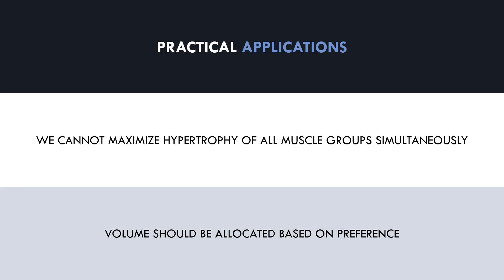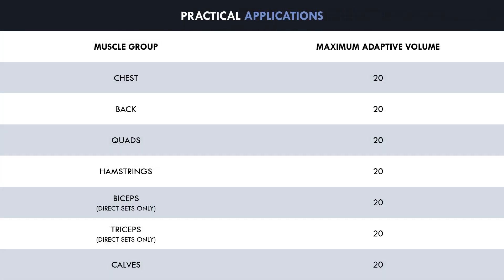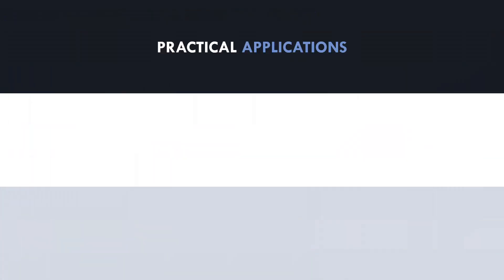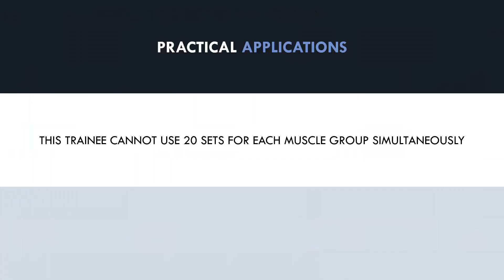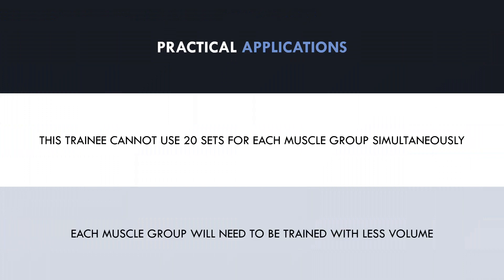Let's go through some examples to help understand this concept. Let's say a trainee sees best muscle growth from 20 sets per muscle group per week for each individual muscle group. Maximum adaptive volume will probably be different for each muscle group in reality, but we'll use 20 sets as an example. However, as we've established, this trainee cannot perform 20 sets per muscle group per week for each muscle group, as this will breach systemic recovery capacity. So each muscle group will need to be trained with less volume to ensure recovery and continued performance improvement.